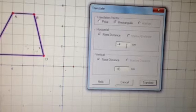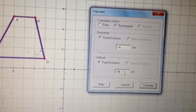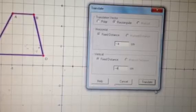So negative 4 on the x-axis that means to the left and negative 6 on the y-axis down. We're going to hit translate. And there we are. So it has been moved.